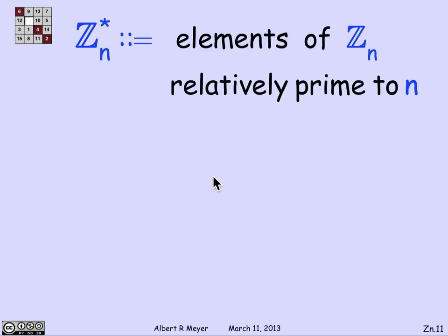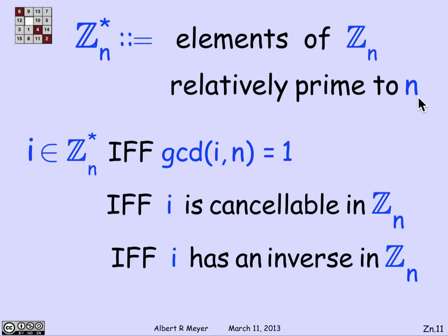Now, the rules that we already figured out for when you can cancel in congruence translate directly over to when you can cancel in Z_n. And now there's a standard abbreviation that's useful to use here. If I write Z_n star, what I mean is the elements in Z_n that are relatively prime to n, the elements whose GCD with n is 1. So what we have is the following equivalent formulations of Z_n star, which correspond to the facts we've already figured out about congruence. Namely, an integer i in the range from 0 to n is in Z_n star, if and only if the GCD of i and n is 1, or i is cancelable in Z_n, or i has an inverse in Z_n.